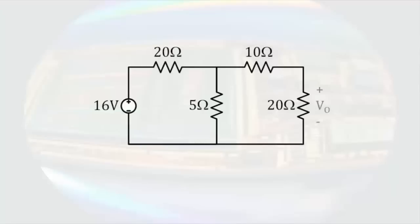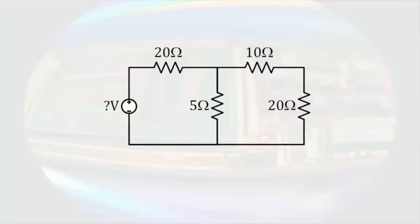If we have this circuit, and we want to determine the voltage marked VO, we could start by pretending we don't know what the value of the source is. Then we can assume a voltage across the 20-ohm resistor. We could, for example, assume 20 volts, and then determine what the consequences would be.